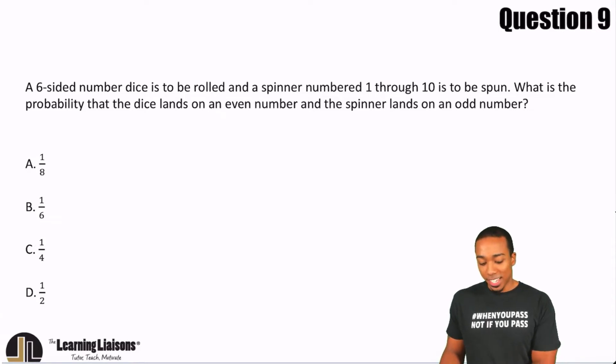A six-sided number dice is to be rolled and a spinner numbered 1 through 10 is to be spun. What is the probability that the dice lands on an even number and the spinner lands on an odd number?